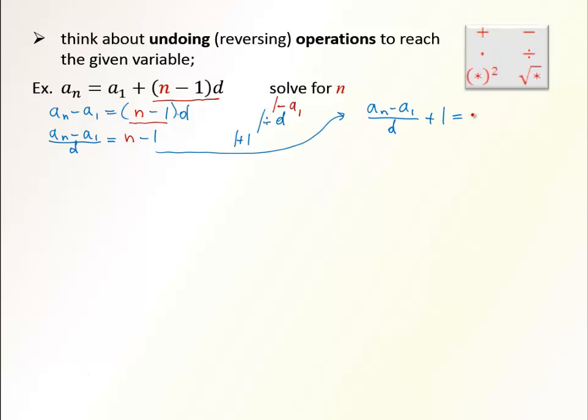Obviously, this formula can be written in different form. For example, we could bring these two quantities under one denominator. So let's try how this will work. If I keep common denominator here, d, then in the numerator, I have aₙ minus a₁ plus d, because 1 becomes d/d. So either like this or like that. Both answers are correct.